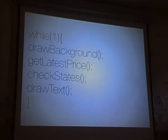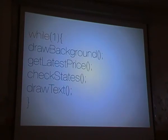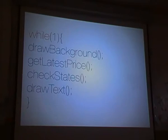What's happening in the code — this is not actually the code but pseudocode I wrote for the presentation. It draws the background and gets the latest Bitcoin price; this is done every minute. Then it checks which state it's in and what the action should be, and then it draws the text with the Bitcoin address, the rate, and all that kind of information.